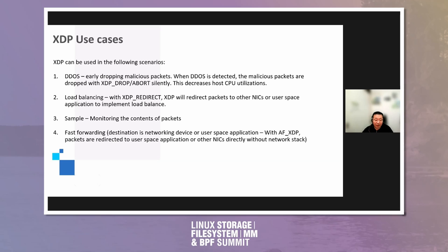XDP can be used in the following scenarios. First, XDP is used in data path security: when a DDoS attack is detected, malicious packets are dropped with XDP_DROP silently. This decreases host CPU utilization. Second, load balancing with XDP_REDIRECT: XDP will redirect packets to other NICs or user space applications to implement a load balancer. Third is packet monitoring — monitoring the contents of packets. In my demo, I use this to check the contents of RDMA packets with SoftRoCE. Fourth is fast forwarding: packets are redirected to user space applications or other NICs directly, without going through the network stack.